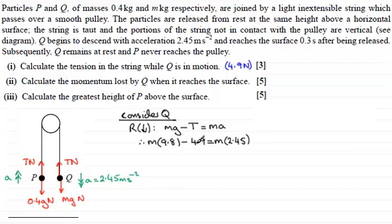So if I rearrange this, let's say we subtract 2.45m from both sides and add 4.9 to both sides. So therefore, I've got 9.8m, therefore 9.8m minus 2.45m must equal 4.9. And if I subtract 2.45m from 9.8m, I end up with 7.35m. And that equals 4.9.